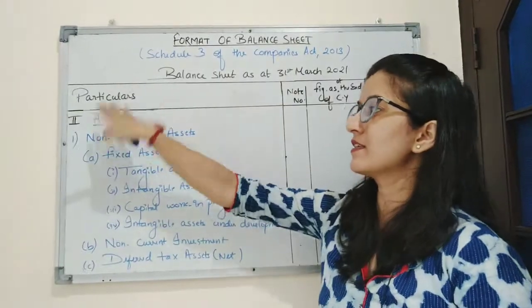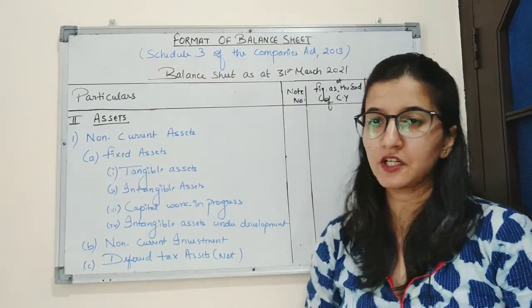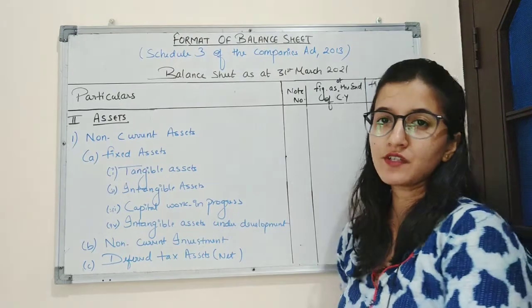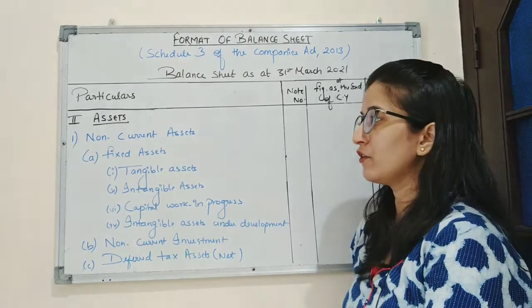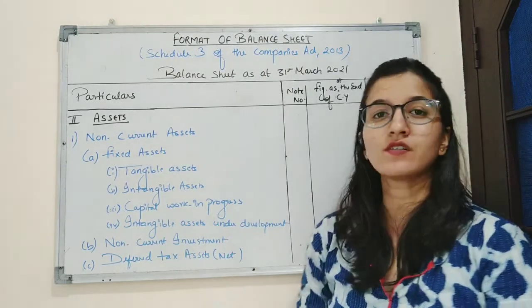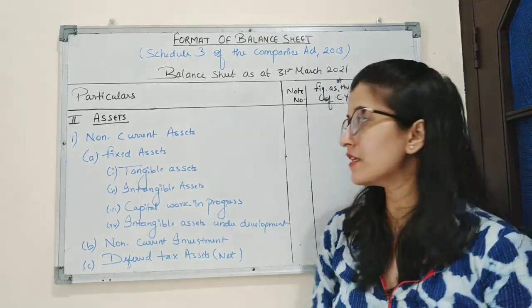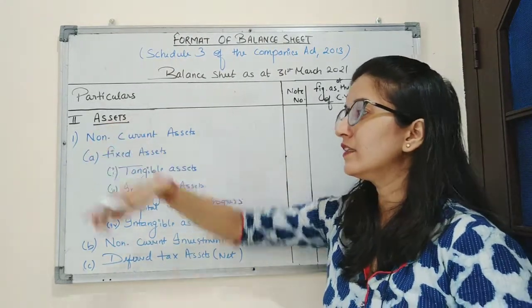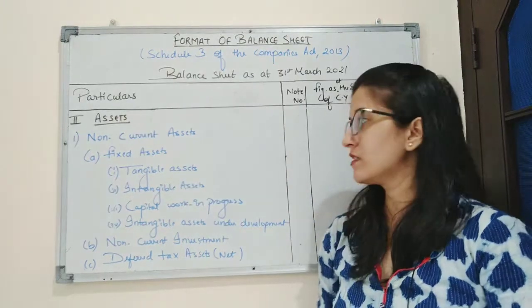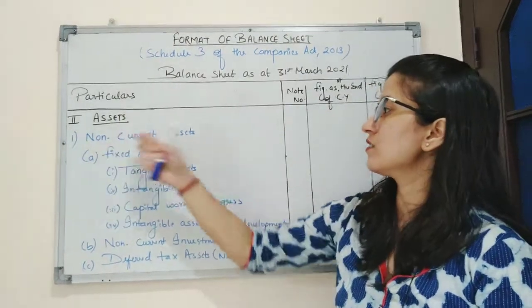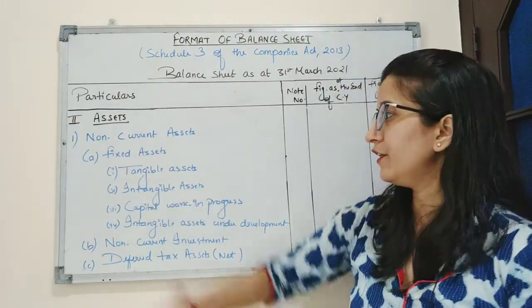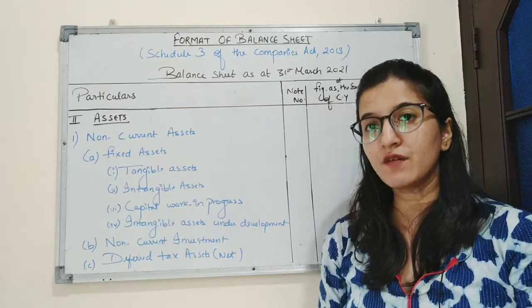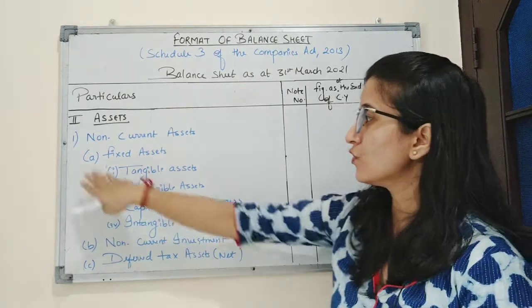Now we will discuss the second part of the balance sheet — assets. As we discussed, the first part was equity and liabilities. Under assets there are two parts: first is non-current assets, and under non-current assets there are five sub-parts.